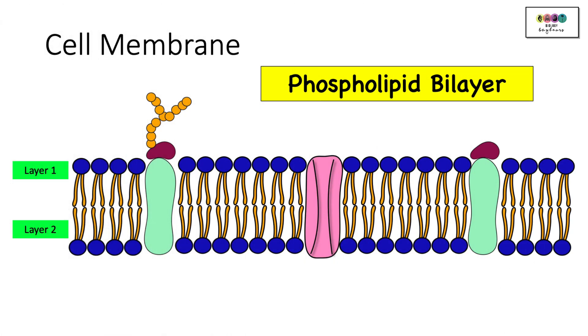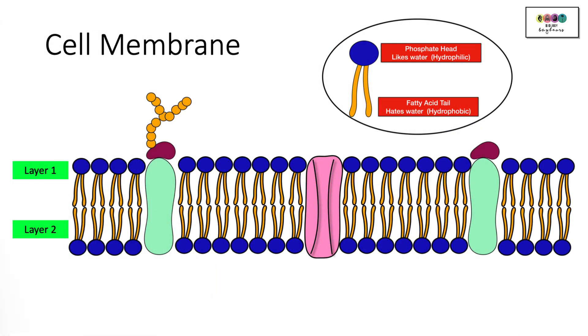It's important that you can outline the structure and the function of the cell membrane. So start with the structure. So the cell membrane is a phospholipid bilayer. It's two layers. There's layer one and layer two of phospholipids. So that's the most basic structure.